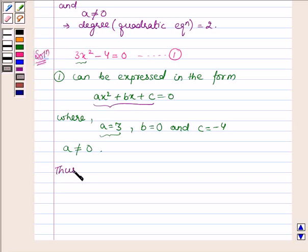Thus, equation 1 is a quadratic equation, since it can be expressed in the form of ax squared plus bx plus c equals 0, where a, b, and c are real numbers and a is not equal to 0.